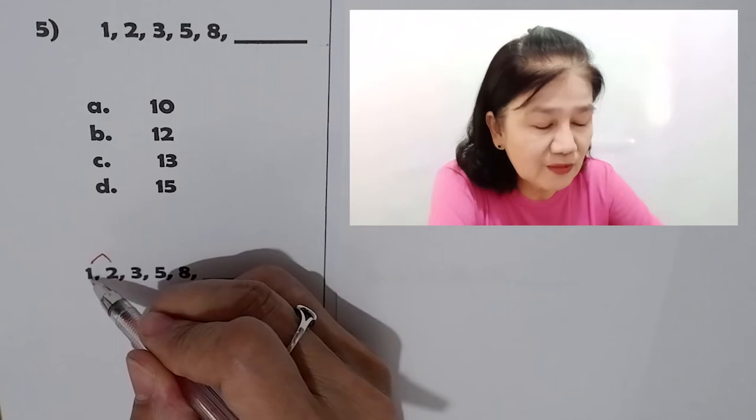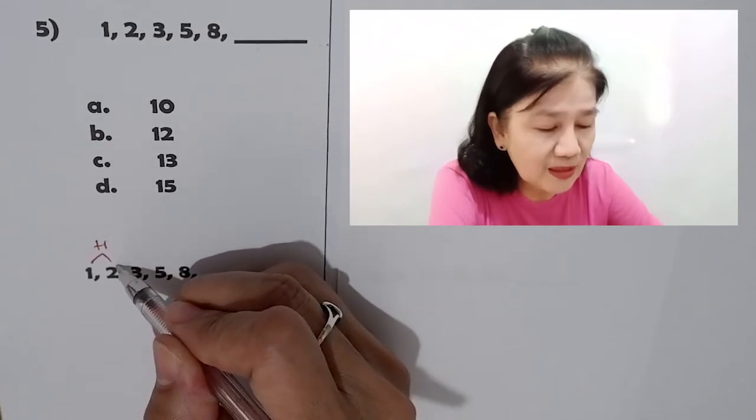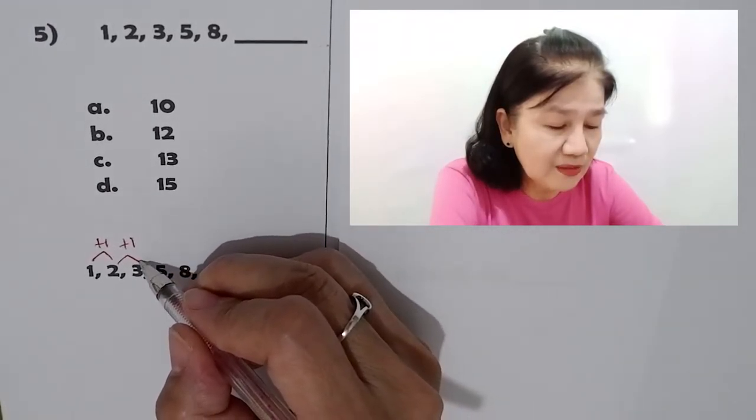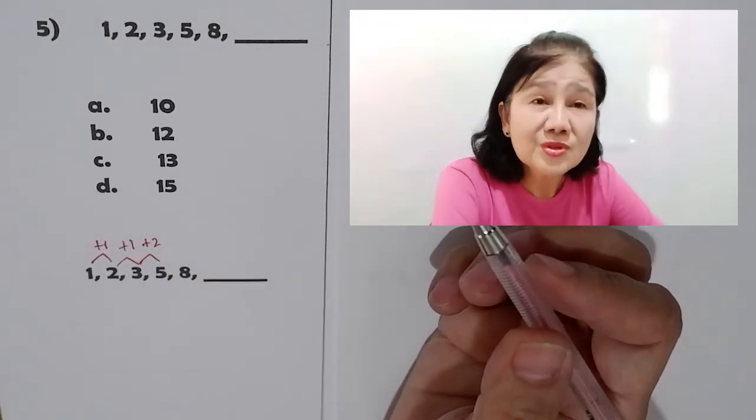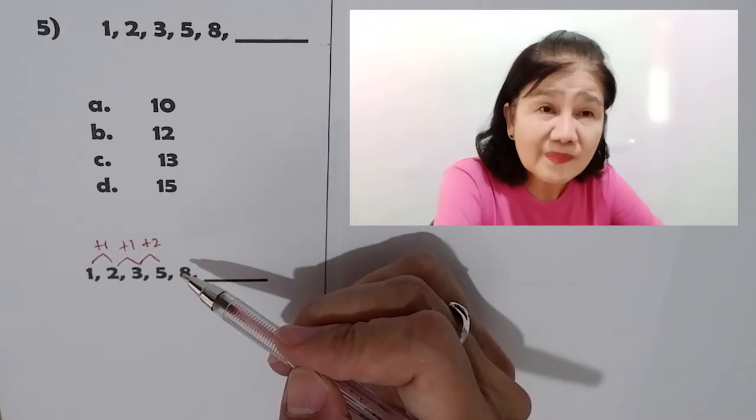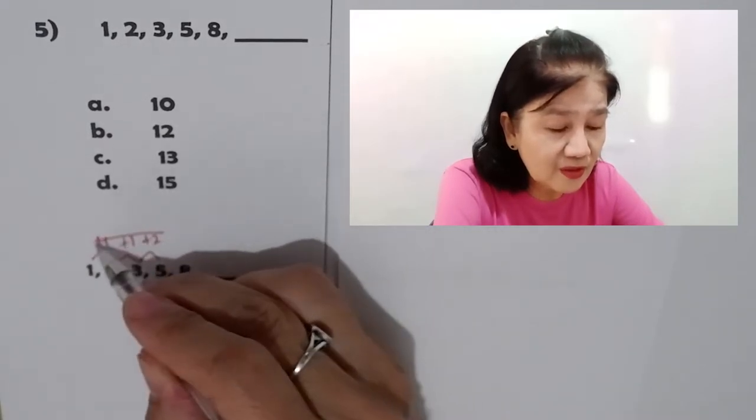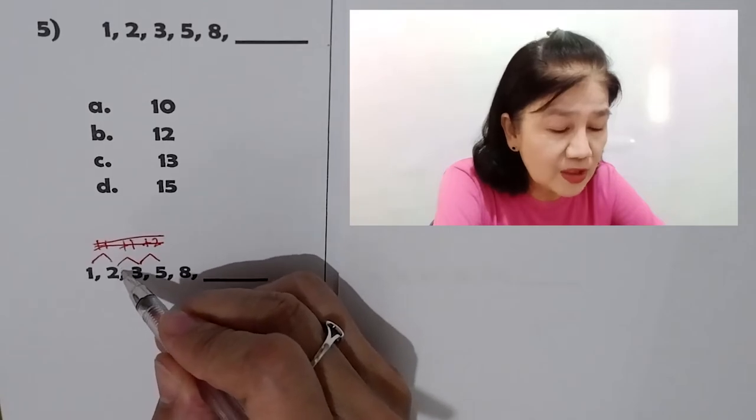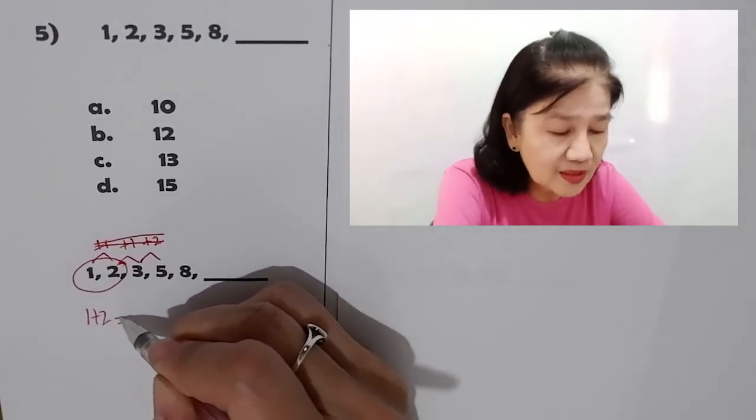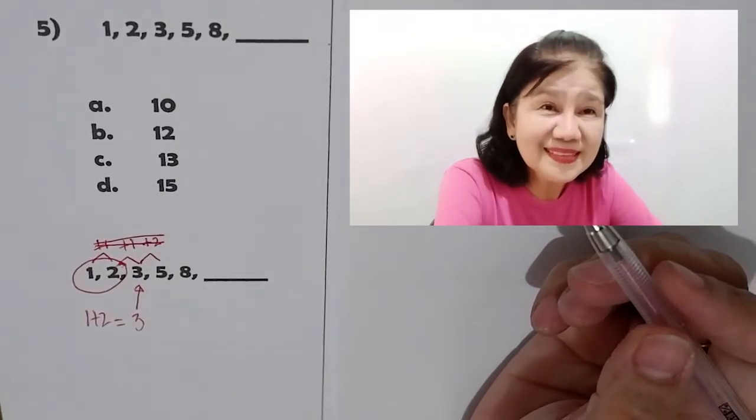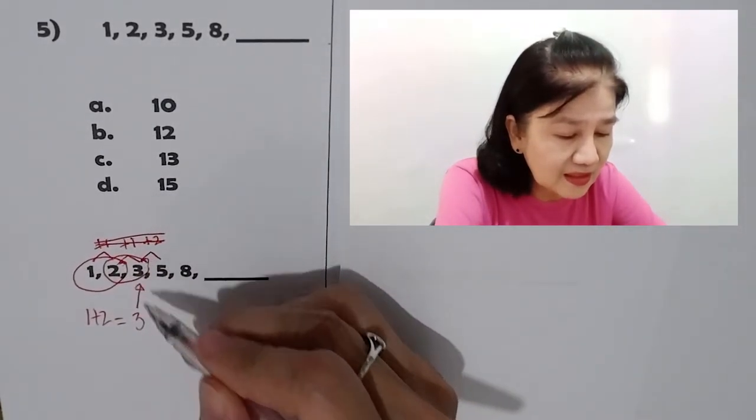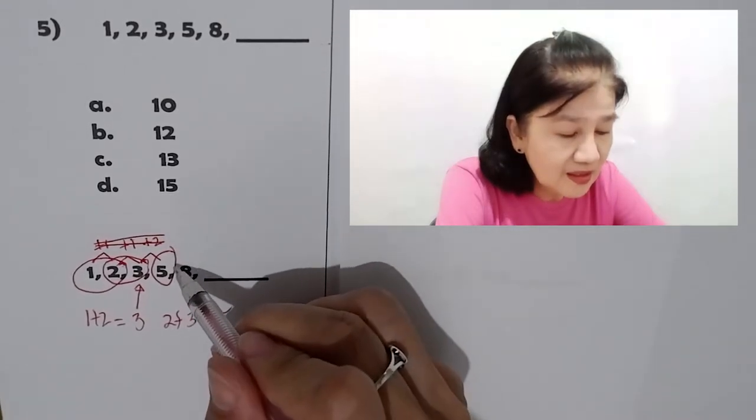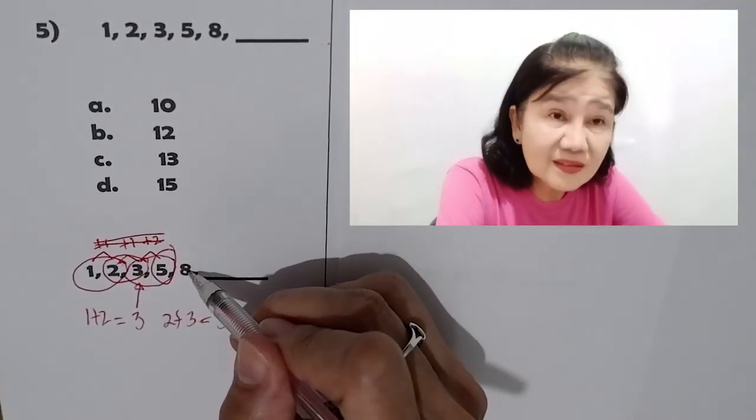So, what do we add to 1 to get 2? We add 1. What do we add to 2 to get 3? We add 1. Oh. What do we add to 3 to get 5? We add 2. So, you can see that there is no pattern. So, try another way. What do you do? Now, do you notice that when you add 1 plus 2, you get 3, which is the next number. And if you add 2 plus 3, you get 5, which is the next number here. Then, 3 plus 5 will give you 8. Right?